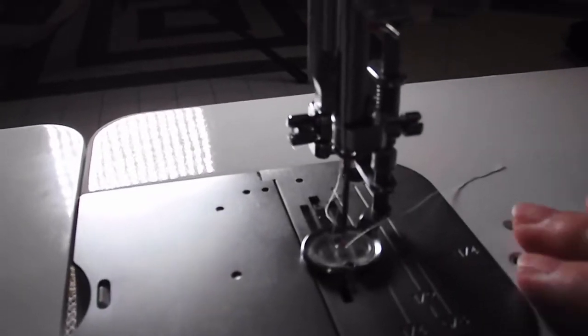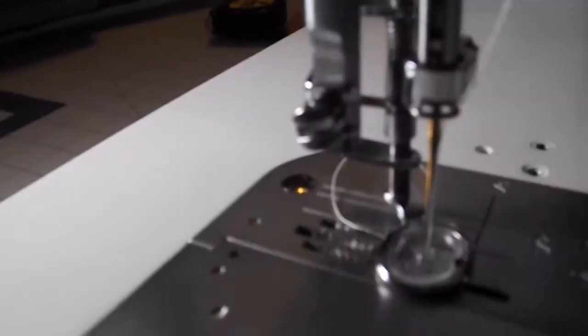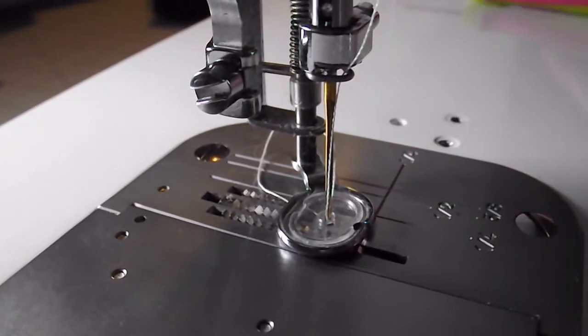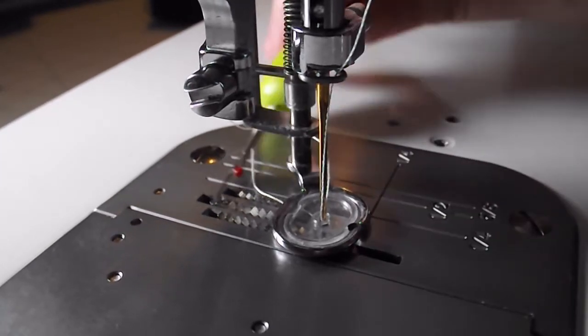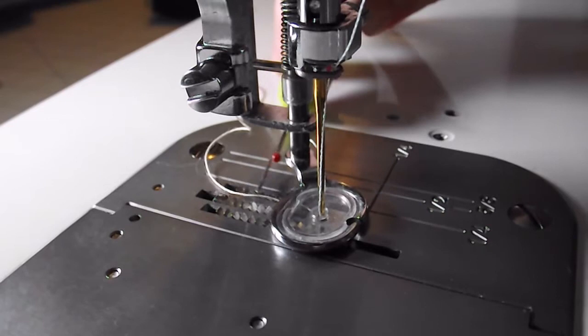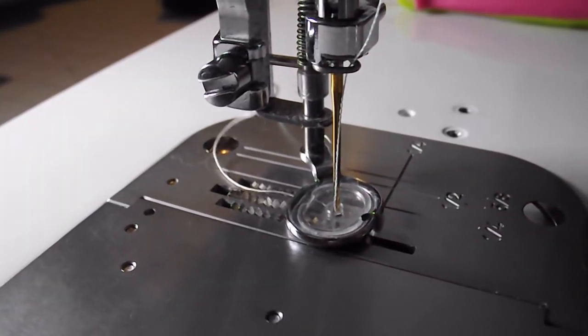So here's a close-up of that plate area. And these right here, these are the feed dogs. So that area right there, that's the feed dogs. And then right now the feed dogs are up, like this little seam ripper I have here is actually scraping against that because they're up. This is what happens when I adjust that dial.